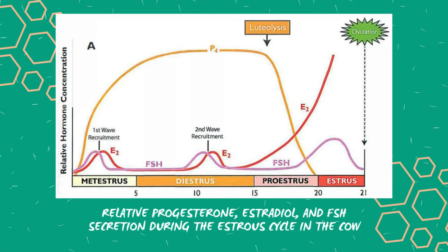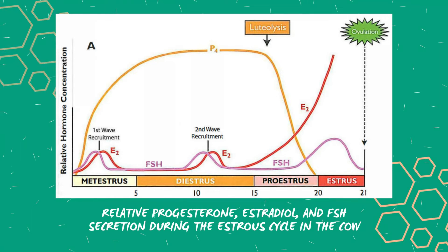This illustration describes FSH concentrations during the course of one estrous cycle in the cow. FSH secretion followed by estradiol secretion occurs during metestrus even though progesterone is high. Antral follicles secrete estradiol in response to FSH; they also secrete inhibin, and this causes FSH secretion to drop. After luteolysis, progesterone decreases, and as a consequence FSH and estradiol increase dramatically.